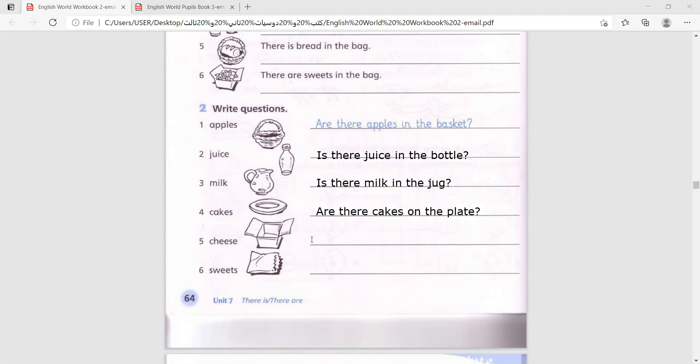And cheese. Cheese is uncountable, we cannot count cheese, so we say is there cheese in the box? Question mark. Number six: sweets. Are there sweets in the bag? This is it for today. Thank you for paying attention with me, and I will see you tomorrow. Goodbye!